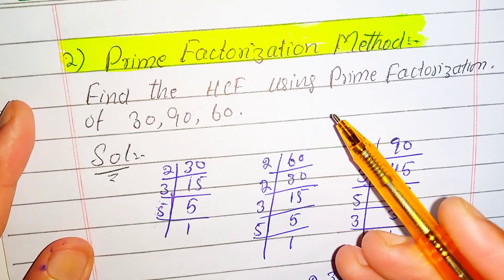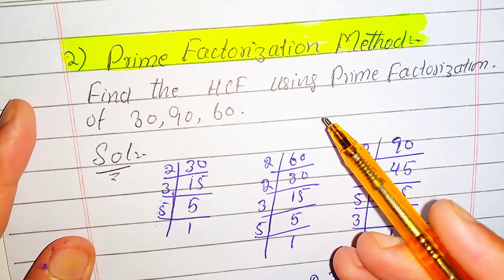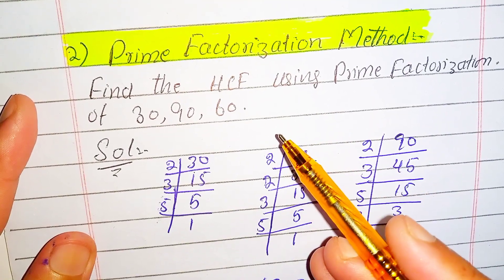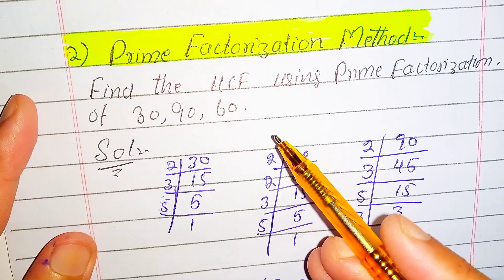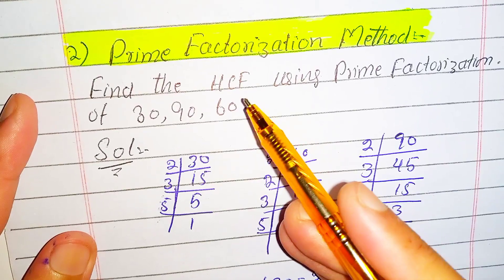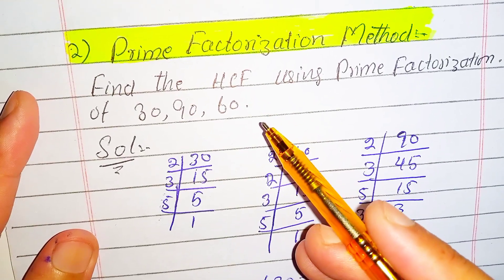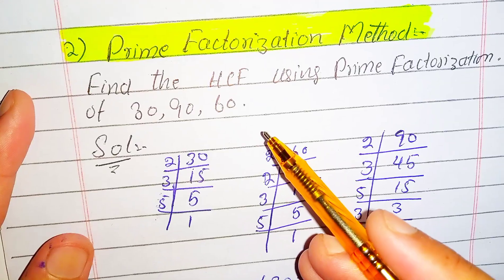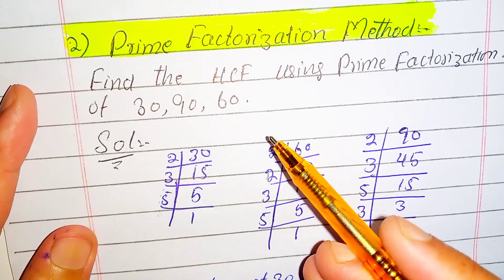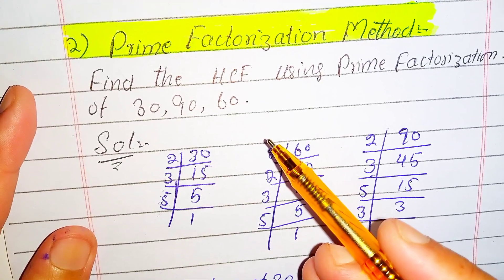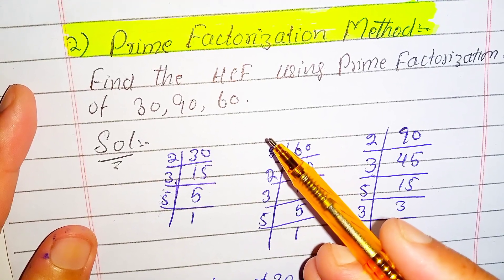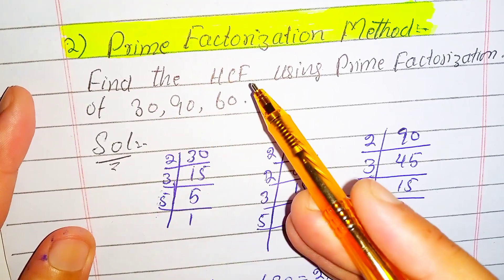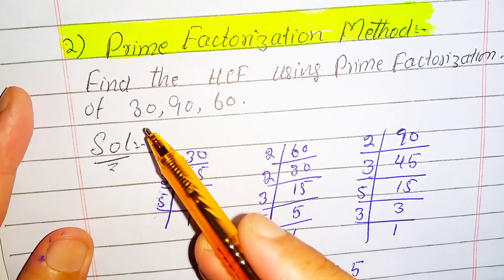According to the prime factorization method, first we do the prime factorization of the numbers for which we want to find the HCF. Then we find the common prime factors, and multiply those common factors to get the HCF. For example, find the HCF using the prime factorization method of 30, 90, and 60.